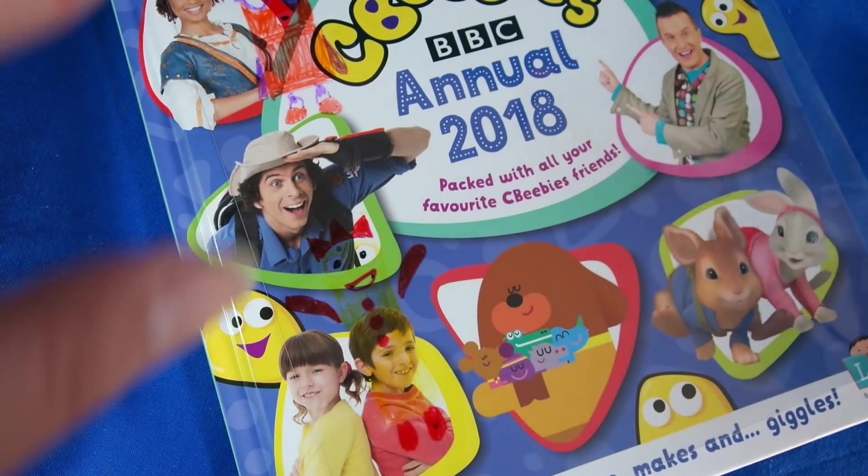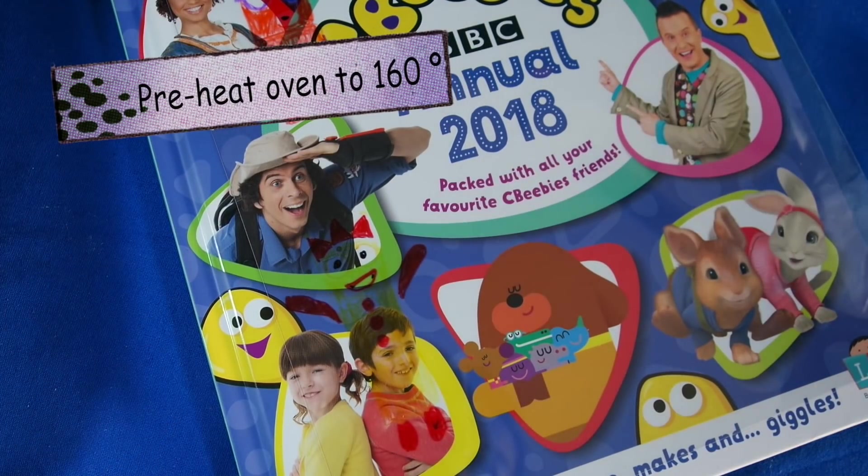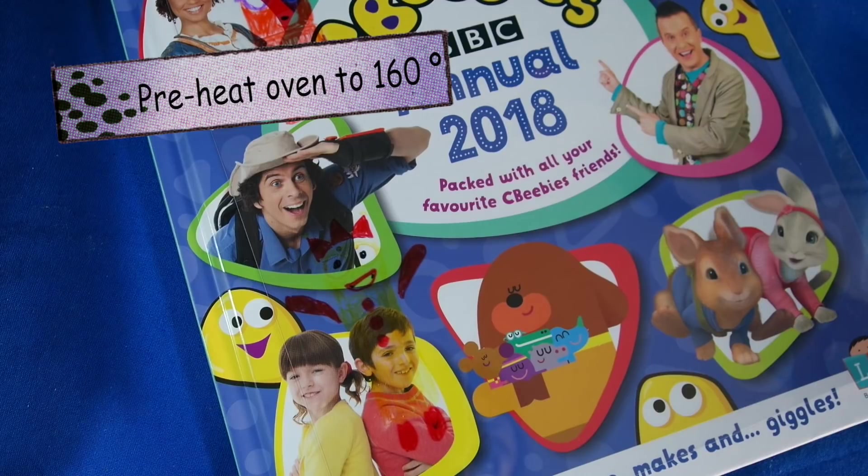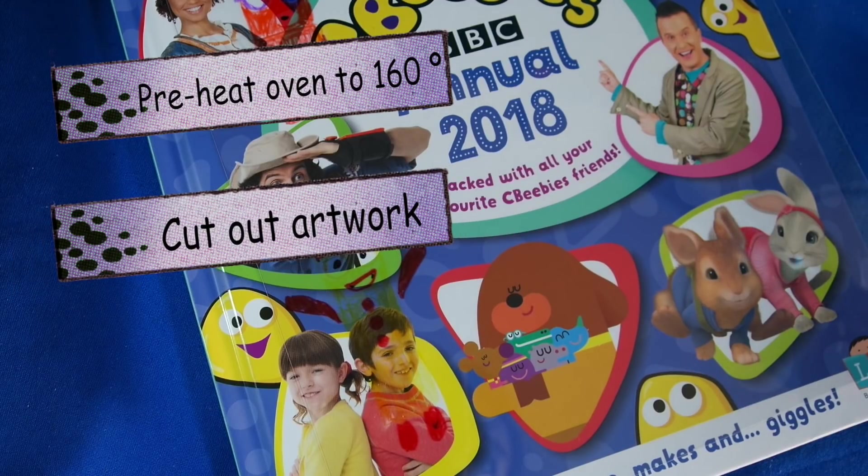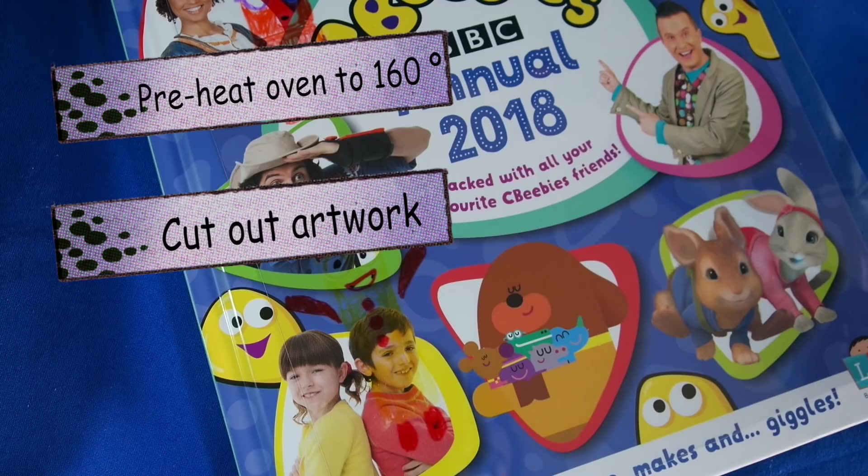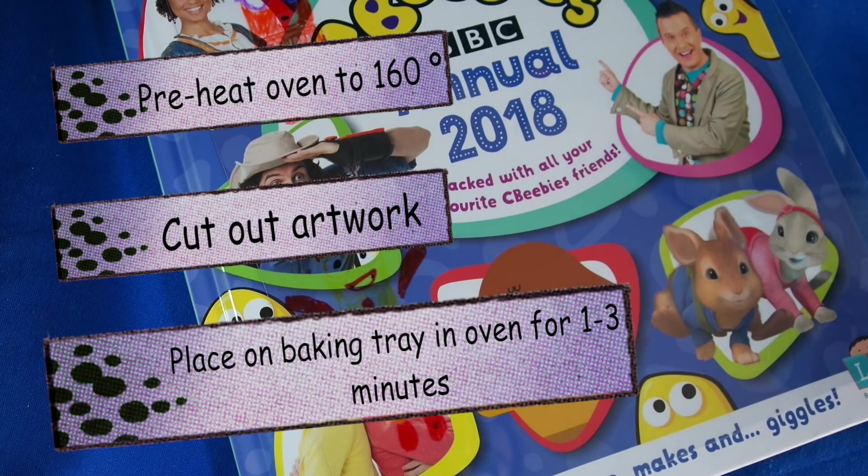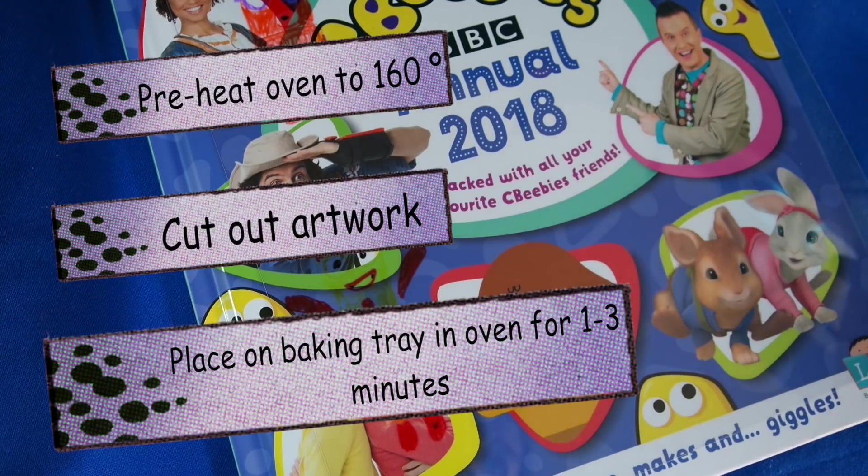So the next thing we have to do according to the instructions is to preheat the oven to gas mark three or 160 degrees. Then I have to cut out my artwork and place on clean baking tray and oven for one to three minutes. It says that it will curl when it starts to cook and then it should be flat, and you leave for 10 minutes to dry.